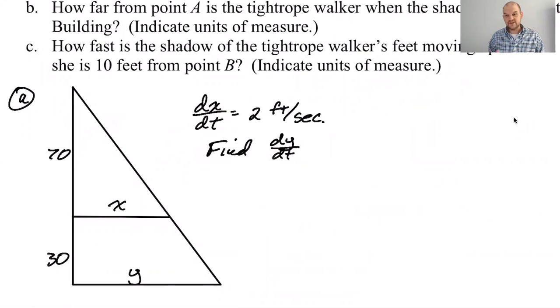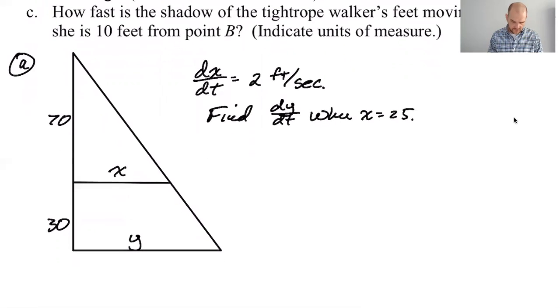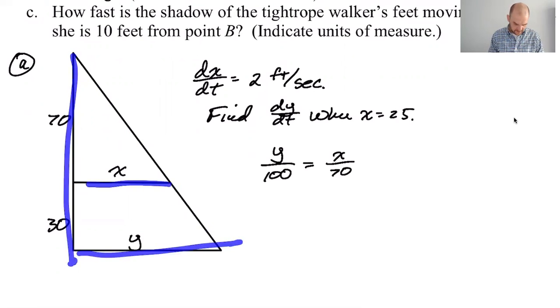I think it's good with related rates to rewrite the problem in the context of the math, like not in the context of the problem, take the context out and just turn it into math. Find dy/dt when x is 25, that's what we're trying to do. All right, so we need a relationship. I definitely see some similar triangles here.